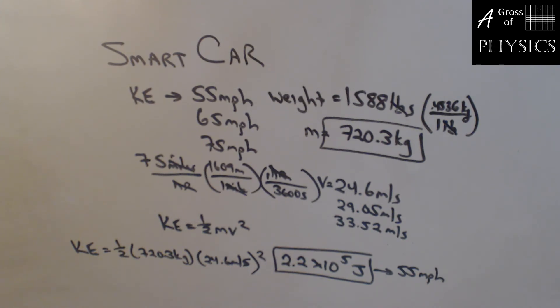At 65 miles per hour, I would do 0.5 times 720.3 times 29.05 squared, and I'm going to get 3.04 times 10 to the 5 joules. That was 65 miles per hour. Finally, I need to get 75. It's one half times 720.3 times 33.52 squared, and I'm getting 4.05 times 10 to the 5 joules. So everyone has the same exponent, 10 to the 5th, but we go from 2 to 3 to 4 times 10 to the 5 joules.